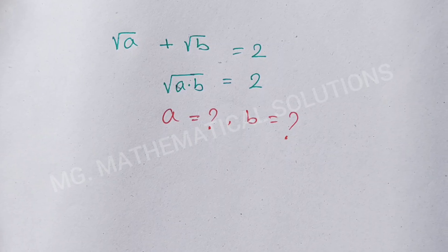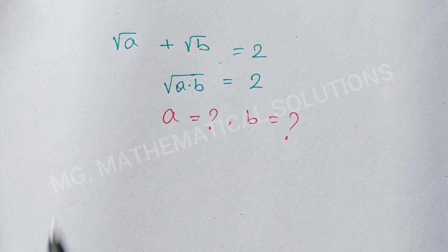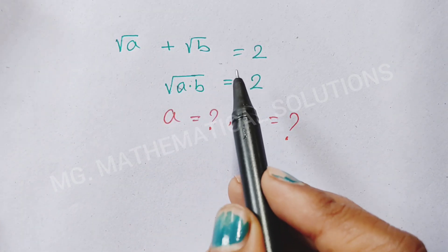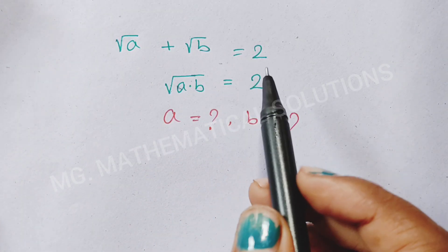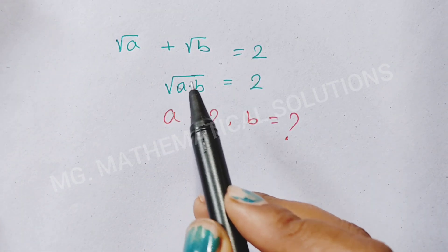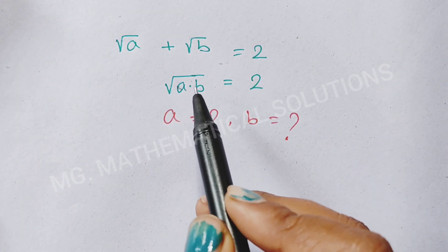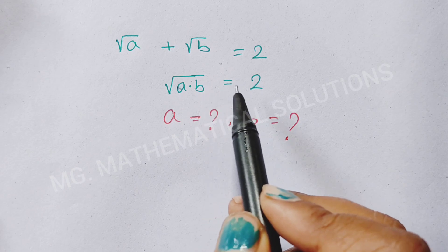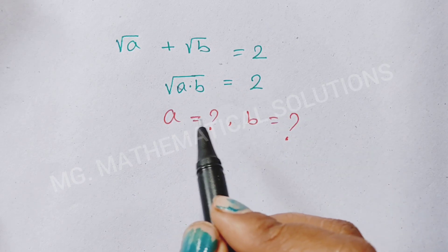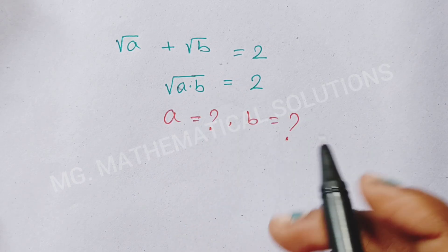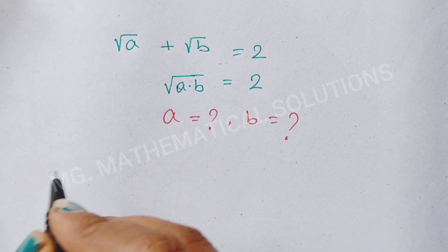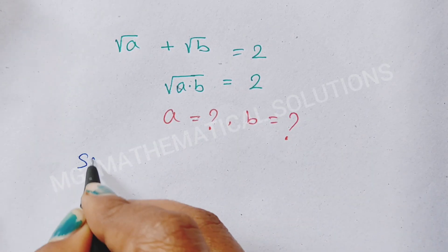Hello students. Today I solve a nice math olympiad problem: root a plus root b equal to 2, and root a times b equal to 2. Then find the value of a and b. Let's see how to solve.